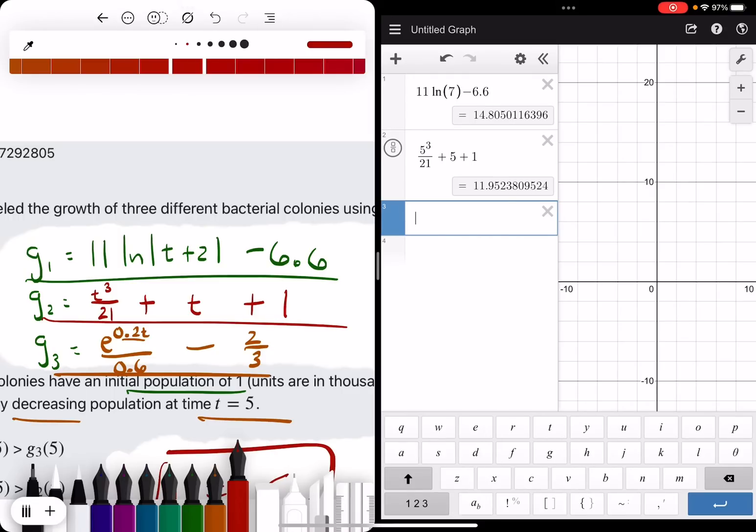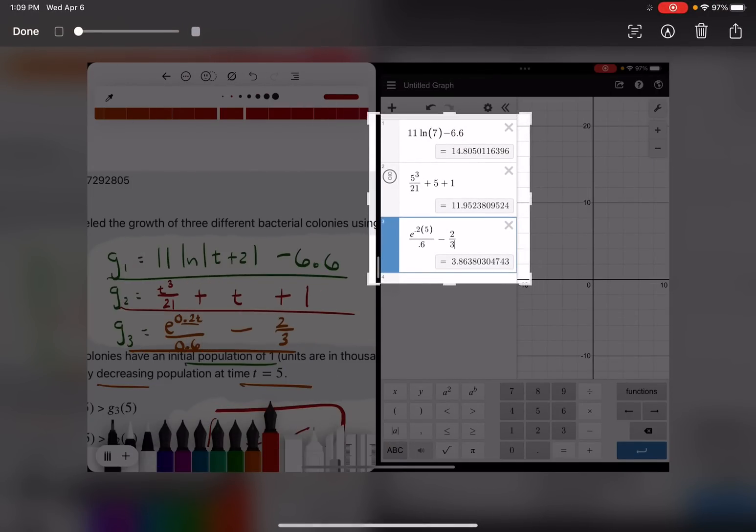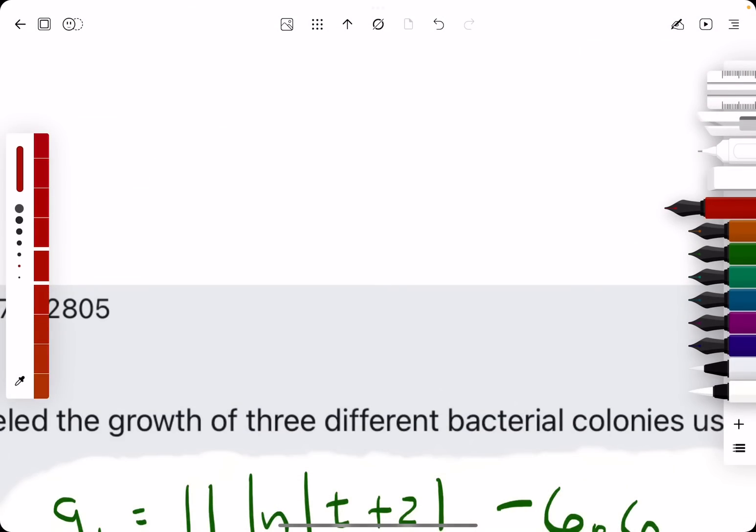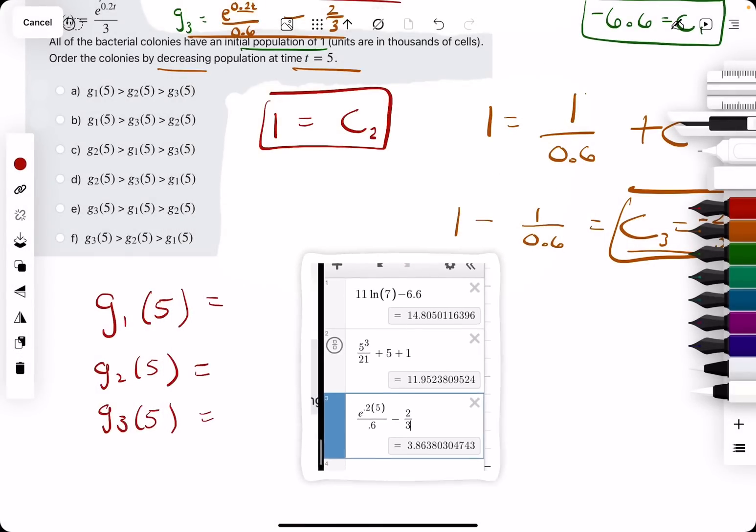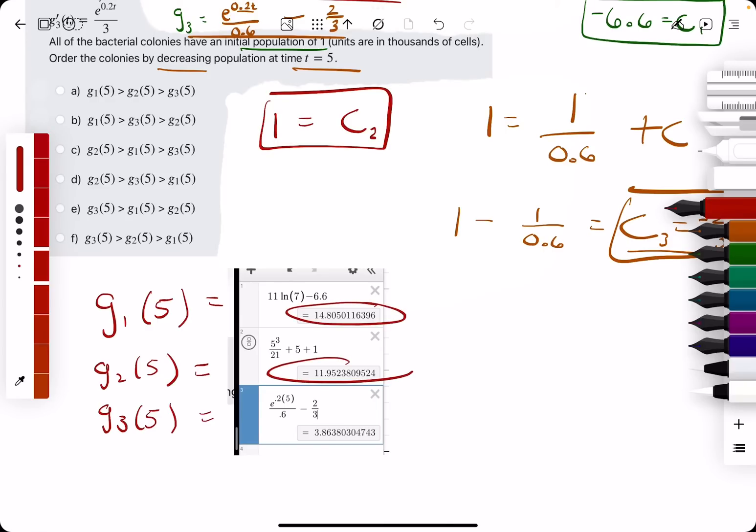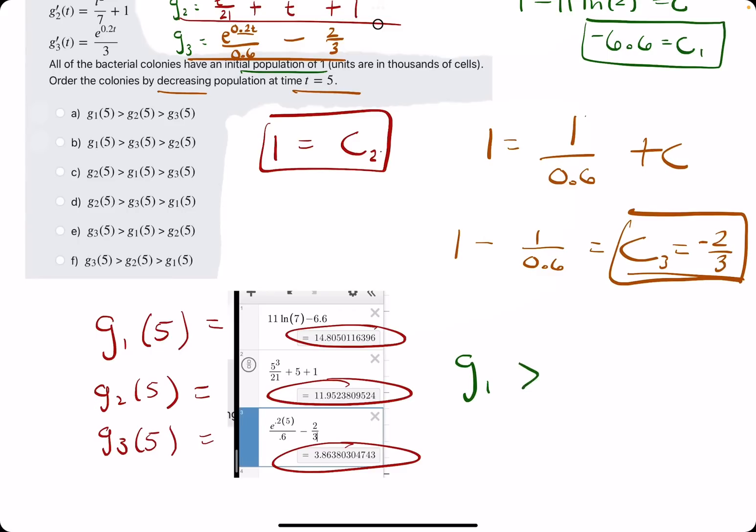And then g3, we have e raised to the 0.2 times t, which is 5. We're dividing this all by 0.6, and then subtracting 2 thirds to get 3.86, or 3.9 if we round. Let's jump back into this and insert the values in order that we got for g1, g2, and g3, ordering them from greatest to least. It looks like they're already ordered from greatest to least, so g1 is greater than g2 is greater than g3. These are all at t equals 5.